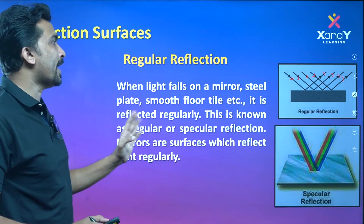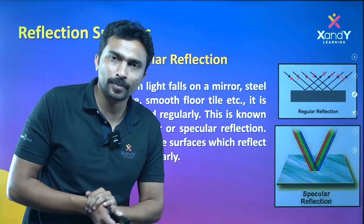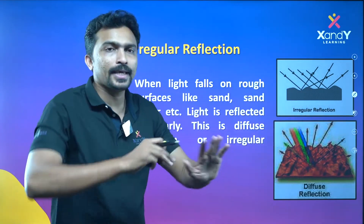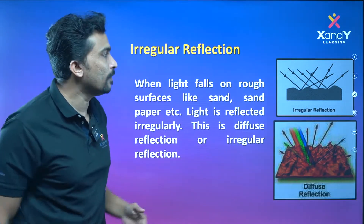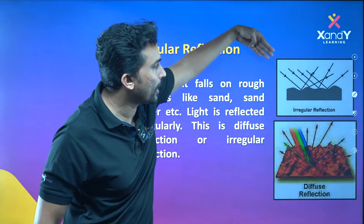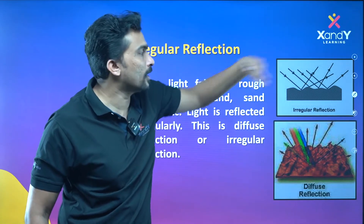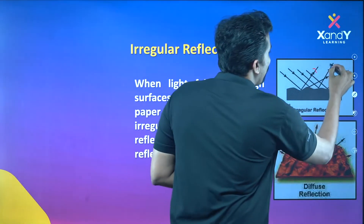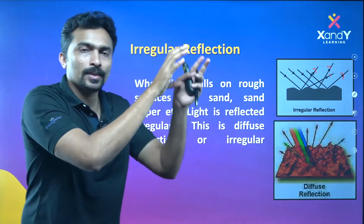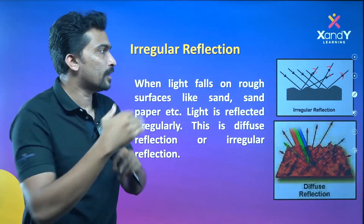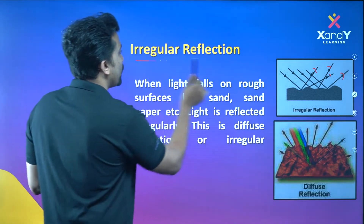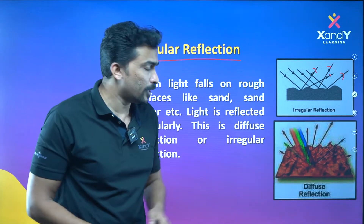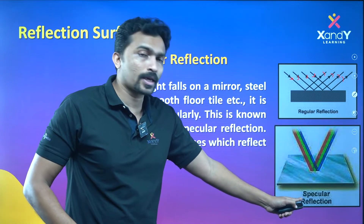It is regular reflection when the surface is smooth or flat — the incoming parallel rays reflect in a parallel, organized manner. It is irregular reflection when the surface is rough — the light goes in many different directions, not the same direction. That is why we call it irregular reflection, also known as diffuse reflection. Regular reflection is called specular reflection.